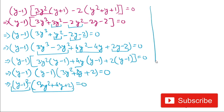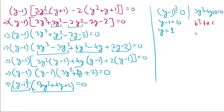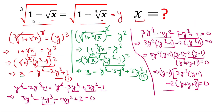Since the product of two values is zero, either (y minus 1) squared equals 0, or 3y squared plus 4y plus 2 equals 0. For the quadratic, we check the discriminant: b squared minus 4ac equals 4 squared minus 4 times 3 times 2 equals 16 minus 24 equals minus 8. Since the discriminant is negative, there is no real solution from the quadratic. Therefore y equals 1.